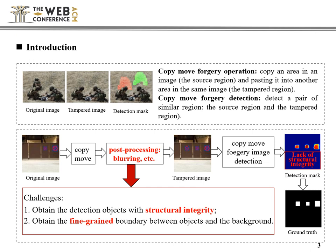In the process of tampering, the tamperer often performs some post-processing operations such as blurring on the tampered image in order to hide the tampering traces. This leads to two challenges in detection: the first is to obtain the detection object with structural integrity, and the second is to obtain the fine-grained boundary between objects and the background.